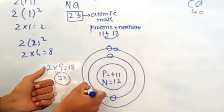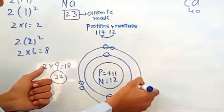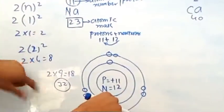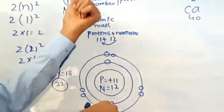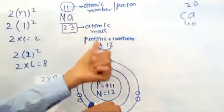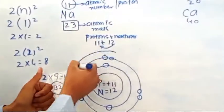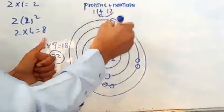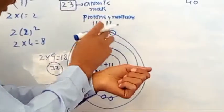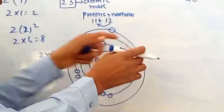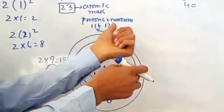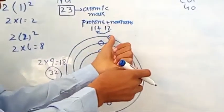The second shell fills with 2, 4, 6, 8 electrons. Now the third shell would contain 18 electrons, but we have only 1 electron remaining. So that 1 electron goes into the outermost shell of sodium. This is the complete structure of the sodium atom — sodium has only 1 electron in its outermost shell.